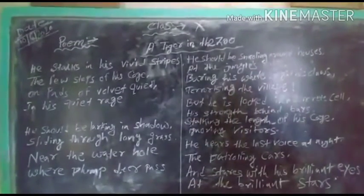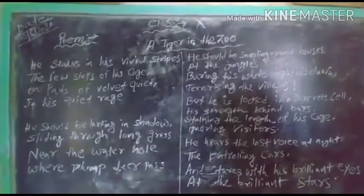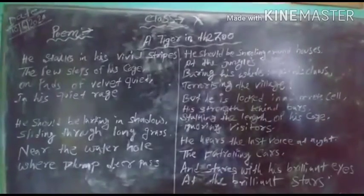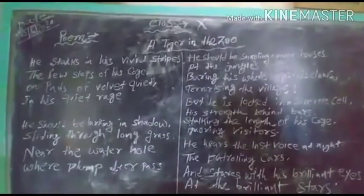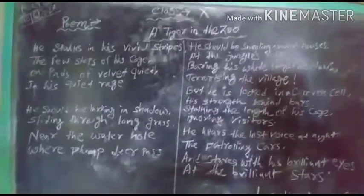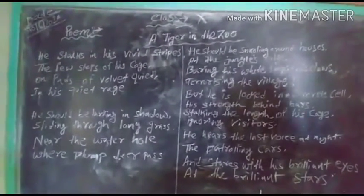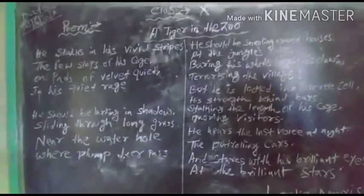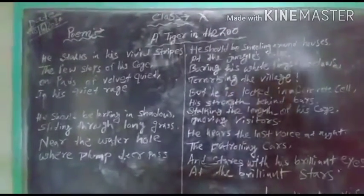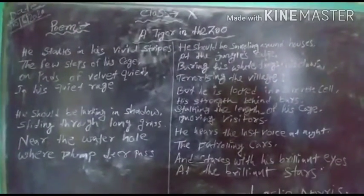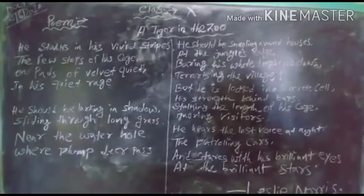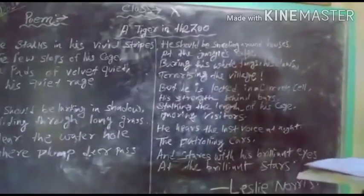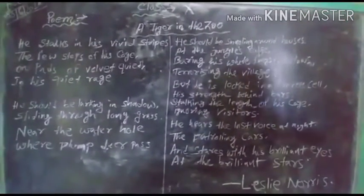If we explain the first stanza into English, it will be like this: The tiger with vivid stripes walks around in the cage and he looks majestic but captivated in a small cage. His paws are velvet-like soft. In spite of being most powerful and ferocious, he is now imprisoned and just helpless. He is angry but can't do anything. This despair and helplessness gets reflected on his face. Here, 'he' refers to the tiger.